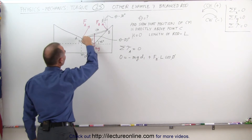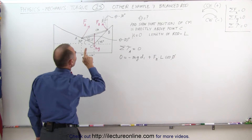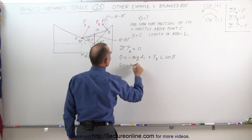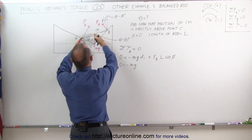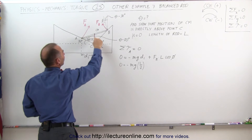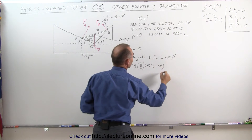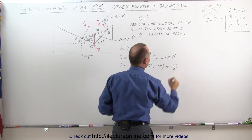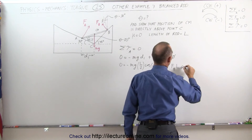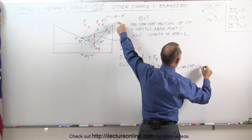D1 is this distance, equal to the distance to the center of mass — L divided by 2 — times the cosine of (theta minus 30 degrees). Plugging that in: 0 equals minus mg times (L/2) times cosine(theta minus 30), plus F sub B times L times cosine(phi), where phi equals 45 degrees minus (theta minus 30 degrees), giving cosine(75 degrees minus theta).